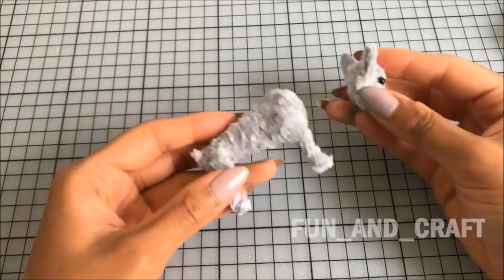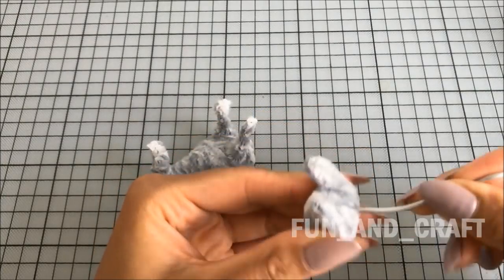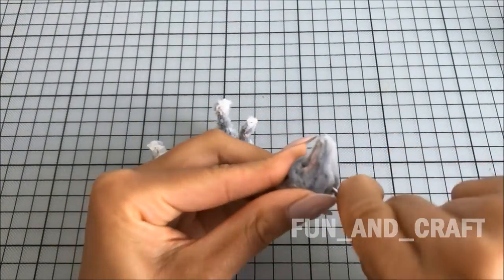If you want, you can glue the head to the body. I chose to use wire because I wanted the dog to be able to move its head. Be very careful when you do that.